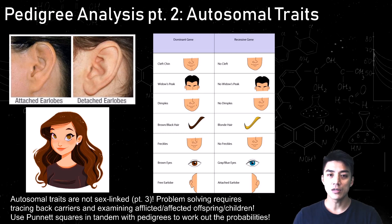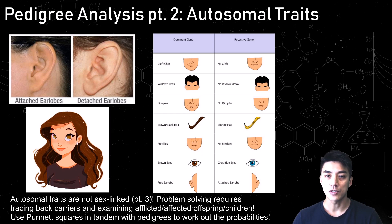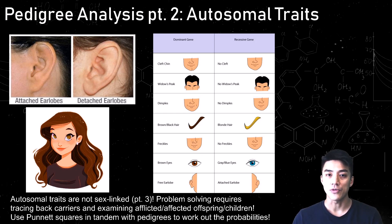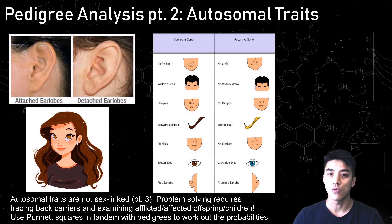Hey and welcome back to Wind Biology. Today we're going to study how to read pedigrees and we're going to use Punnett squares in tandem with them to figure out how autosomal traits are passed on to offspring. Autosomal traits are not sex-linked — that's something we'll study in part three, where females are usually carriers for diseases and males are disproportionately affected, as discussed in part one.